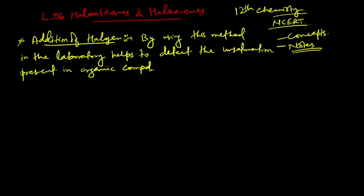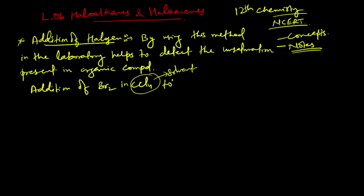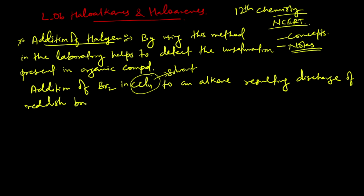Wherever the unsaturation is present, it will go and attach over there and an addition type of reaction will take place — both halides will go and add to the adjacent carbon. So we can continue with addition of Br2 in CCl4. Here CCl4 acts as a solvent. It is added to an alkene, resulting in discharge of the reddish-brown color of bromine.